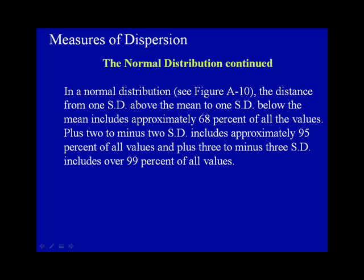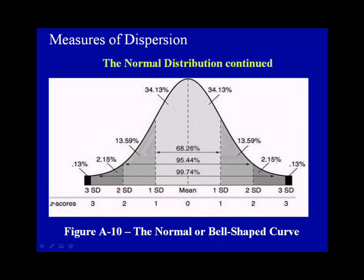In a normal distribution, see figure A10, the distance from one standard deviation above the mean to one standard deviation below the mean includes approximately 68% of all the values. Plus 2 to minus 2 standard deviations includes approximately 95% of all values, and plus 3 to minus 3 standard deviations includes over 99% of all values.